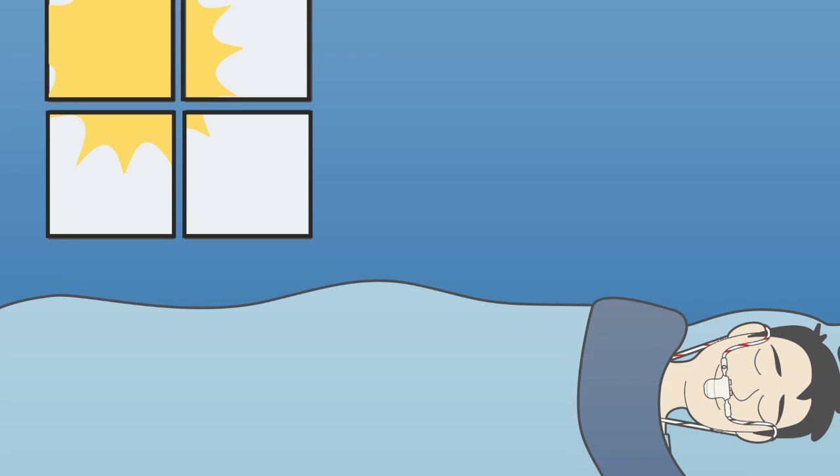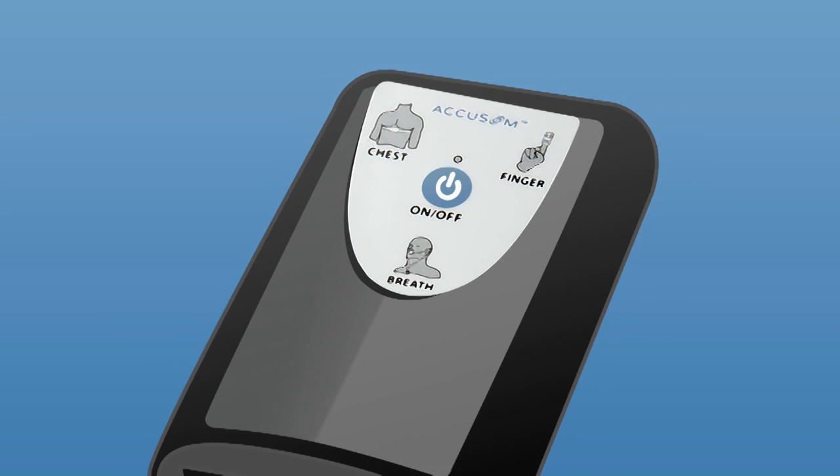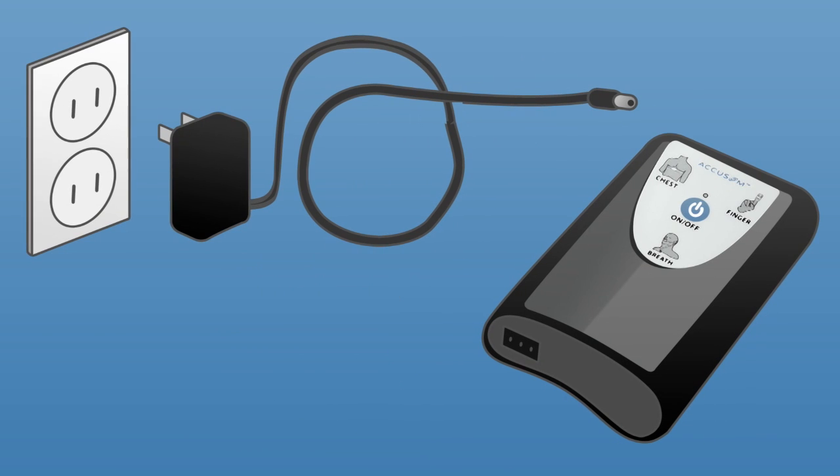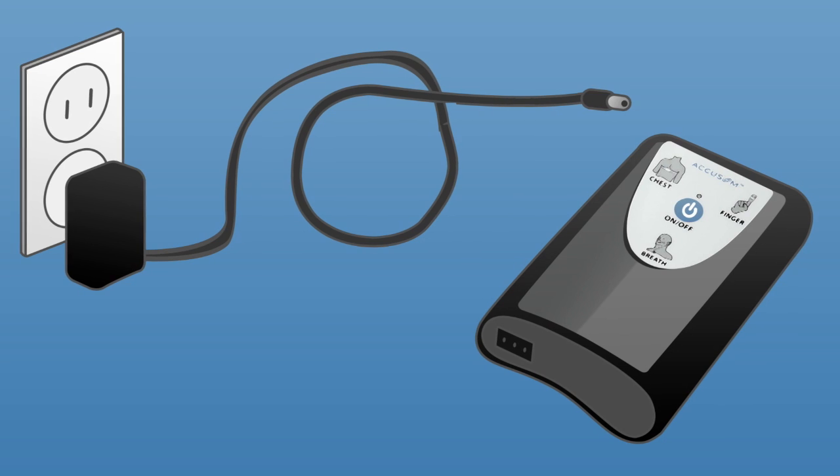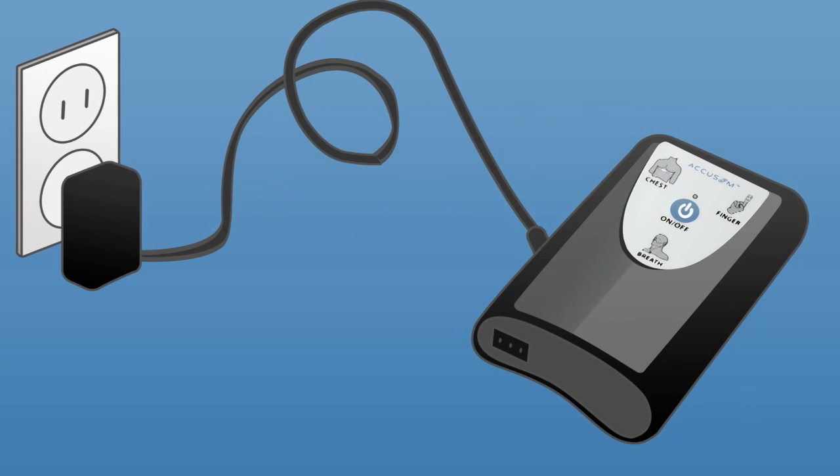When you wake up, you need to make sure you follow these instructions in the right order. One, turn the device off if it has not already turned itself off. Two, disconnect all wires from the device. Three, connect the charger to an electrical outlet. And four, turn the device on and immediately connect the charger cord to the back of the device.